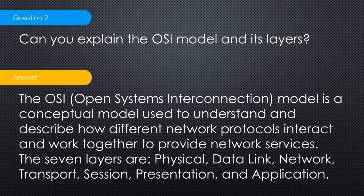Second question: can you explain the OSI model and its layers? This one is guaranteed — somebody, somewhere will ask you. Some will go in more detail, some will ask just a generic question, and some will ask you to name all seven layers. The OSI (Open System Interconnection) model is a conceptual model used to understand and describe how different network protocols interact and work together to provide network services. The seven layers are: physical, data link, network, transport, session, presentation, and application.